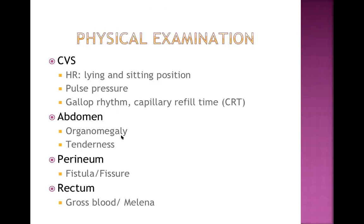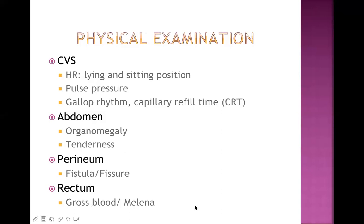Examine the abdomen for organomegaly like hepatosplenomegaly. In cirrhosis, portal hypertension causes massive splenomegaly while the liver may be smaller. Examine for tenderness — if present, the organ may be congested or infected. Examine the perineum for fistula and fissure as causes of lower GI hemorrhage. Perform digital rectal examination to check for gross bleeding or melena — insert a finger and check for black-colored stool or blood stains.